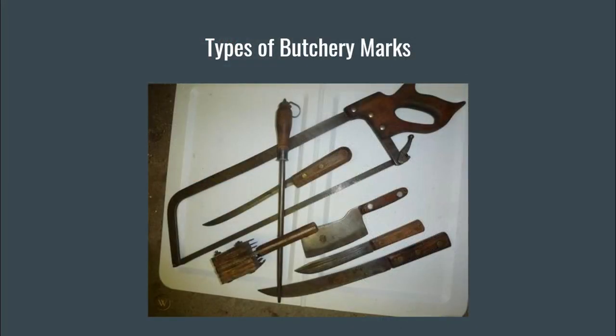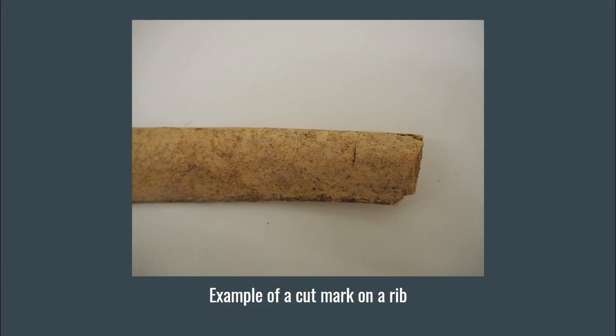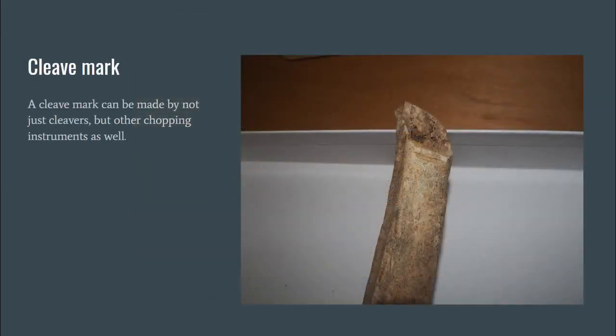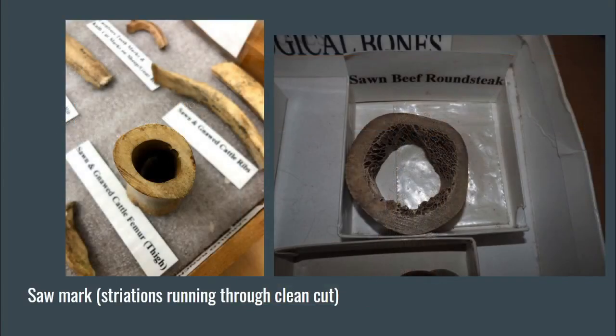Next, we'll get comfortable with identifying some of the types of marks that butchery can leave on bones. Cut marks are some of the most common marks left on bones and can often indicate butchery. Cleave marks are similar to cut marks except that they are typically deeper cuts and show a different pattern as the force dissipates in the bone, quite literally cleaving the bone in half. Cleave marks do not just have to be made by cleavers — they can be made by other instruments such as hatchets and butchering knives. Saw marks are something we expect to see a lot of in historic butchery, especially bones that have come from restaurants or professional butchery shops. They are best shown by the striations or lines running through the cut, and are clean but can be seen through these striations, which are caused by the stopping and starting action of the saw.